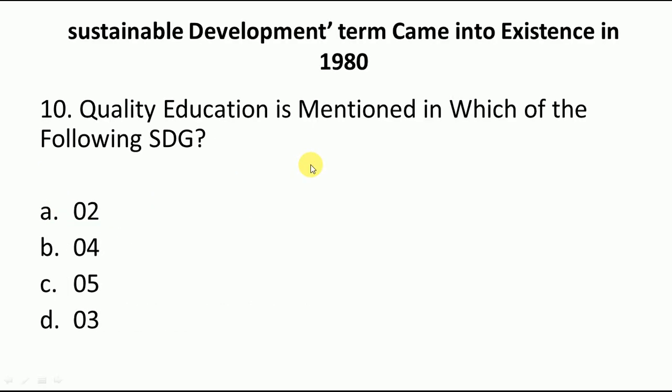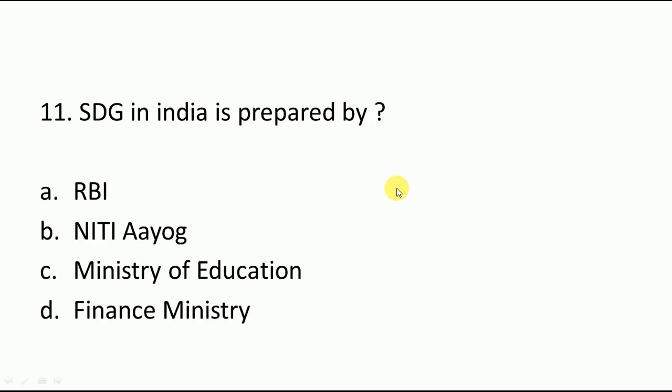Okay, quality education is mentioned in which of the following SDGs? This is important — you have to tell in which SDG it is mentioned. If you watch the important SDGs carefully, you will understand what is important. Among the 17 SDGs, the most important ones are what we have covered in MCQs. Quality education is mentioned in SDG number 4.